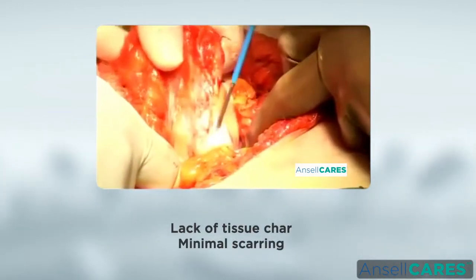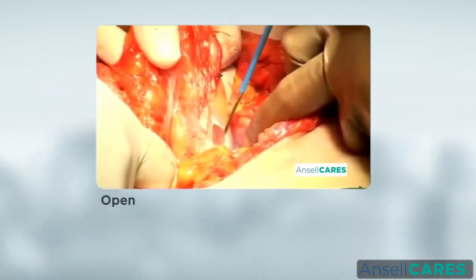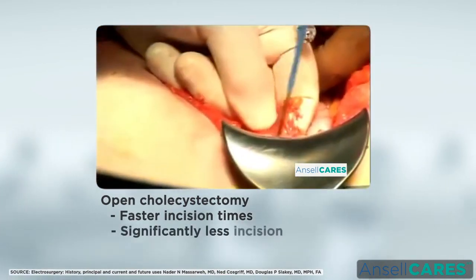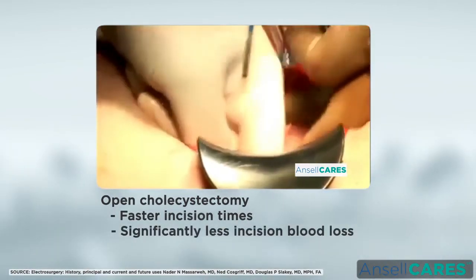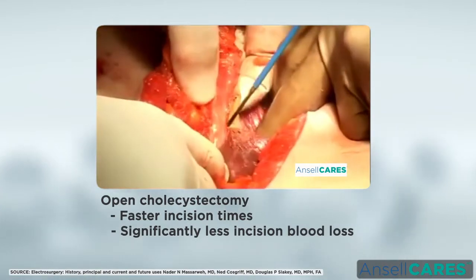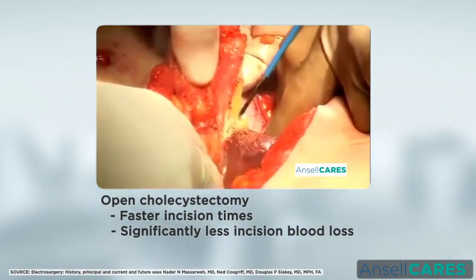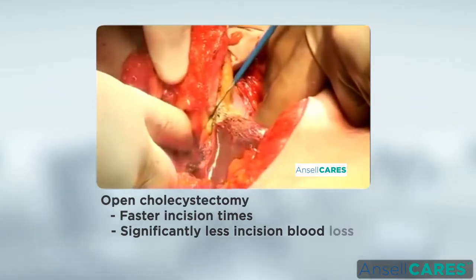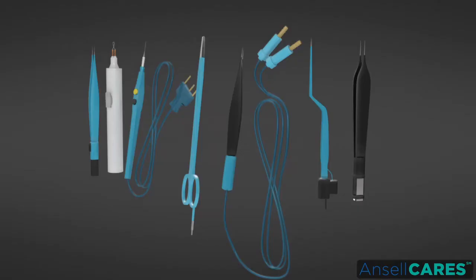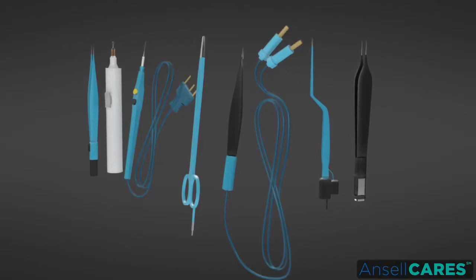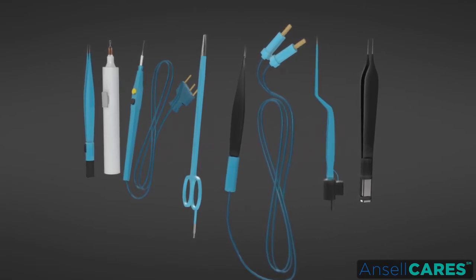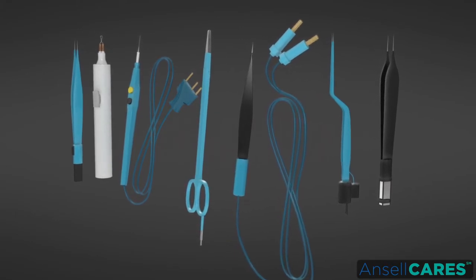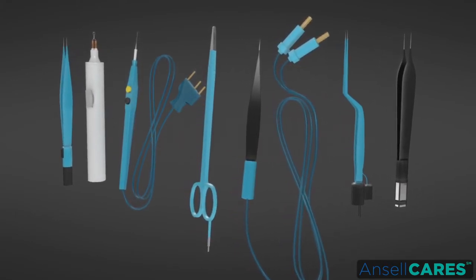This may further explain the lack of tissue char and minimal scarring on wound healing. Open cholecystectomy wounds carried deeper with electrosurgery had significantly faster incision times and significantly less incision blood loss compared with those done with scalpel or laser, with no significant difference in subjective or objective patient pain. The use of electrosurgery during an operative procedure is almost as common as wearing gloves.